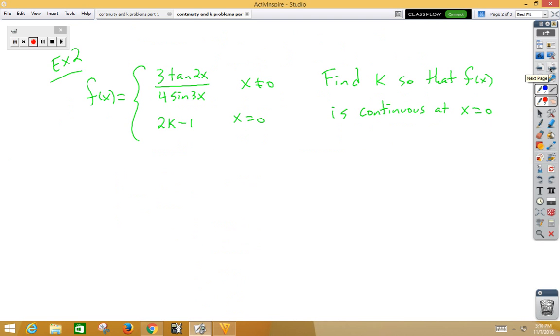Again, find k so that f of x is continuous, this time at x equals 0. Again, we have not equal to 0, that's the two-sided limit, and equal to 0 is the value at the point. So we take the limit as x approaches 0, two-sided limit, 3 tan 2x over 4 sine 3x is equal to the value at the point, which is 2k minus 1.